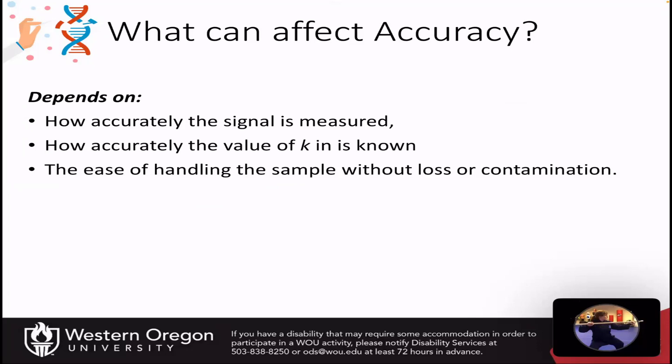What can affect accuracy? How accurately the signal is measured during your experiment can be up to you — for example, if you're doing titrimetry and go over the concentration, your signal won't be measured accurately. There's also how accurately the value of K is known from your equation, and the ease of handling the sample without loss or contamination. If you're spilling on the balance or losing solution, or having to use a column to purify your sample, you're going to lose some material at each of those steps.